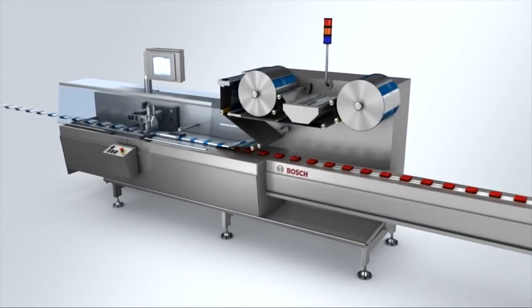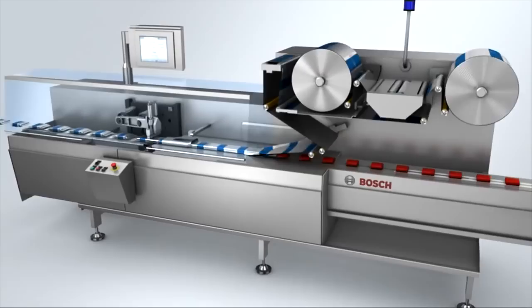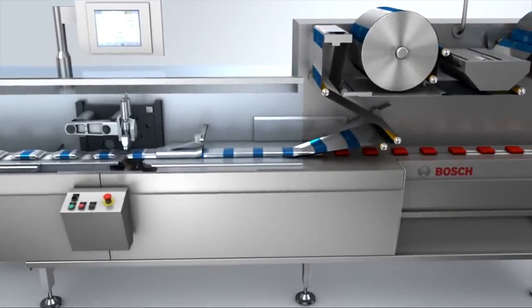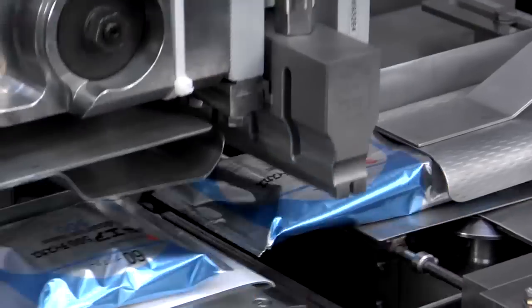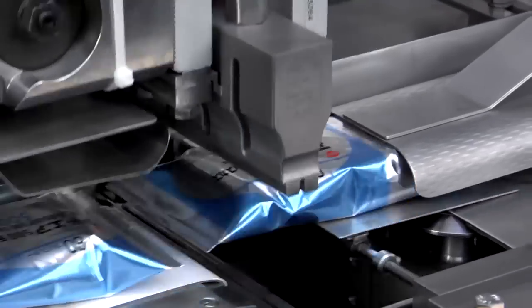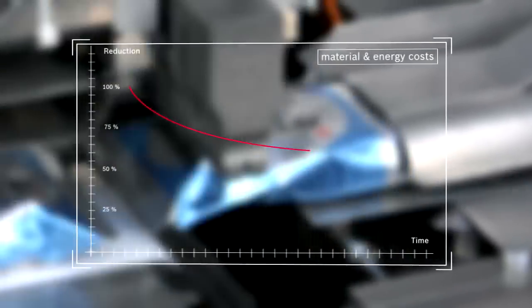The new generation of horizontal flow wrappers for hermetic packaging: ultrasonic sealing is the key. By using ultrasonic sealing, we achieve savings of material and energy of 30 to 40 percent.